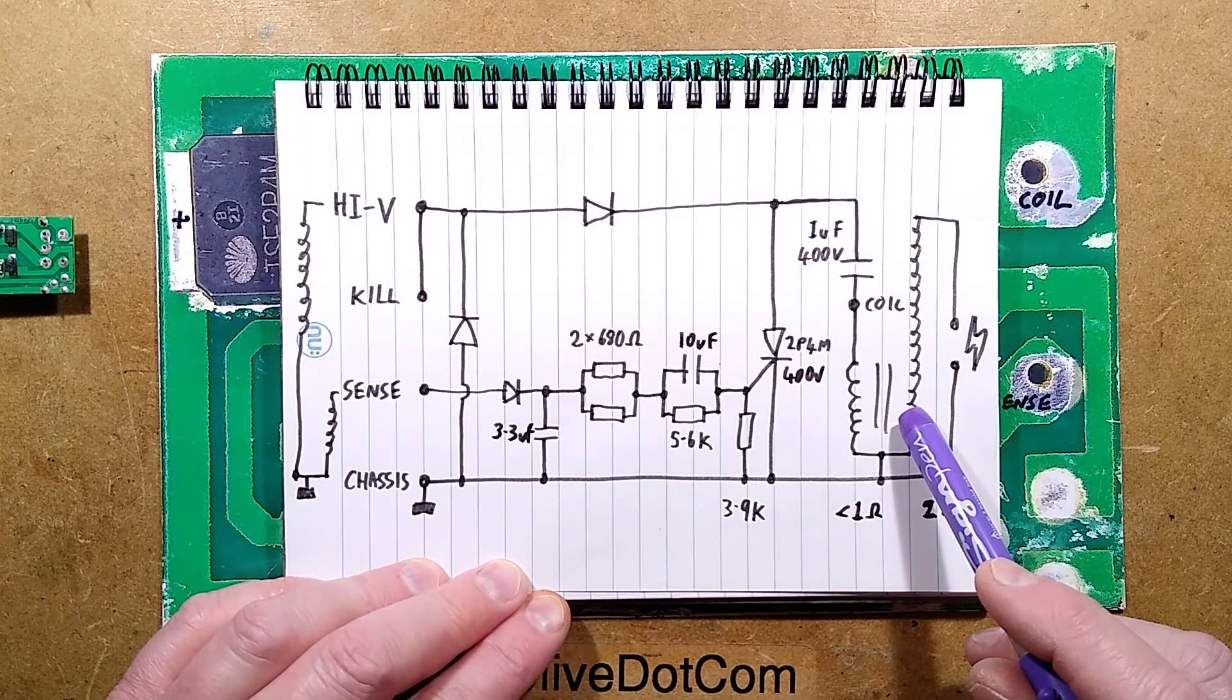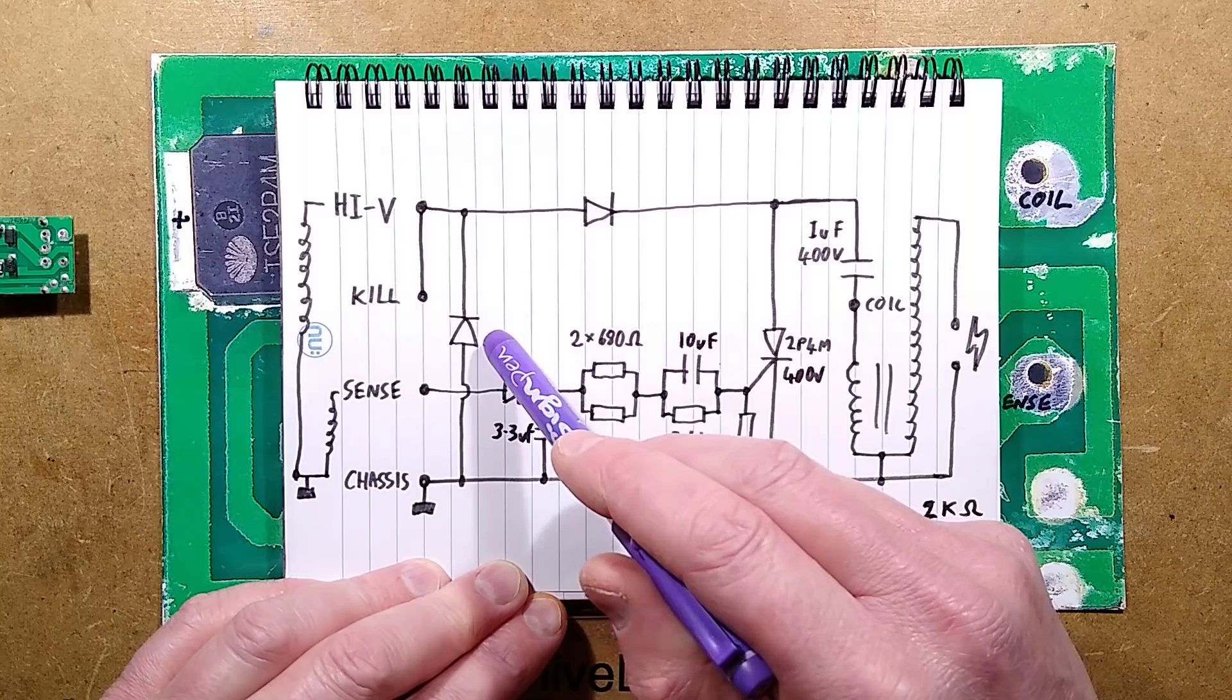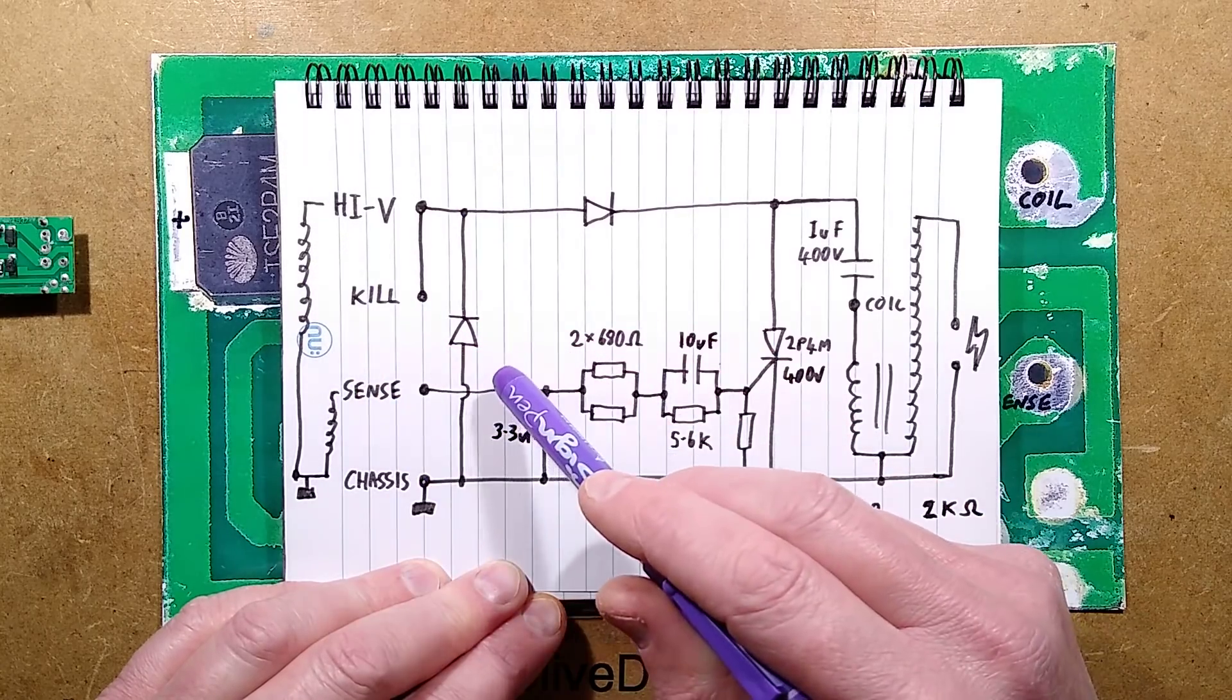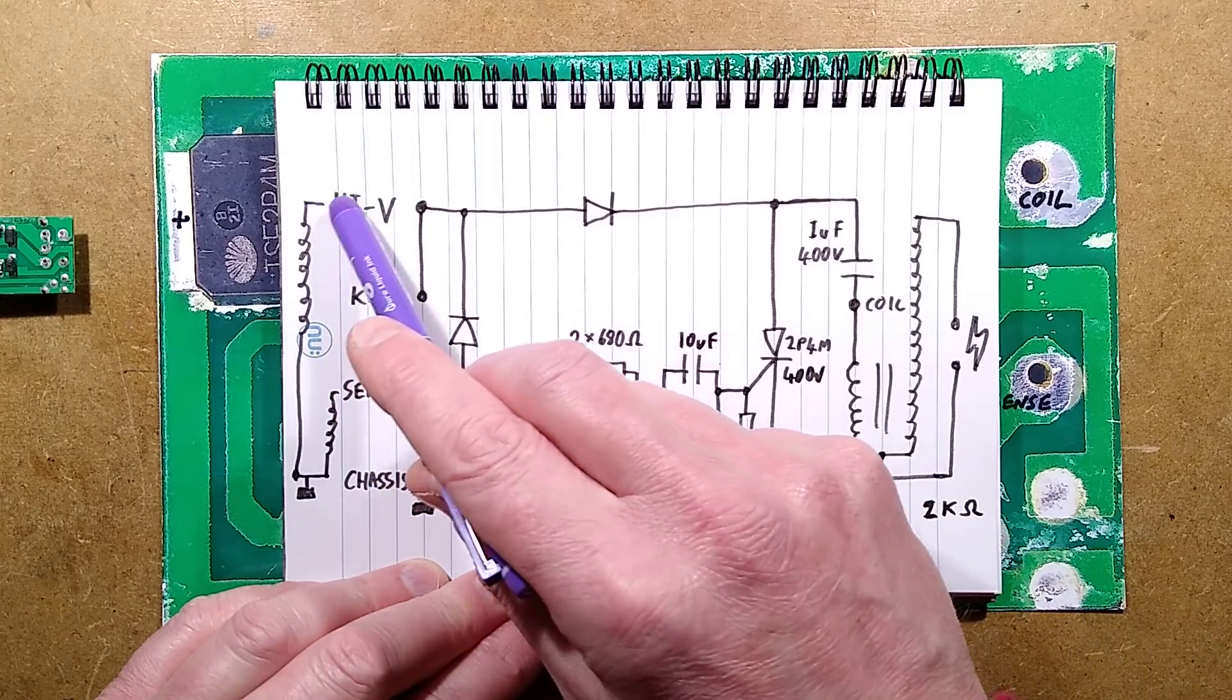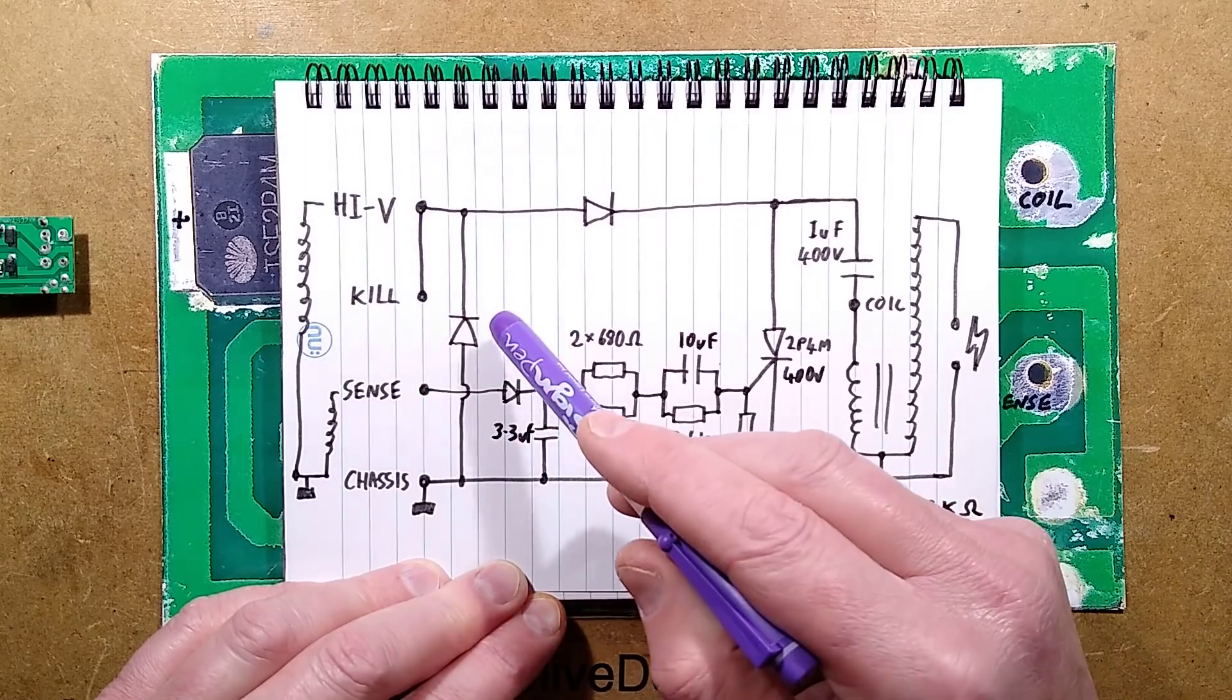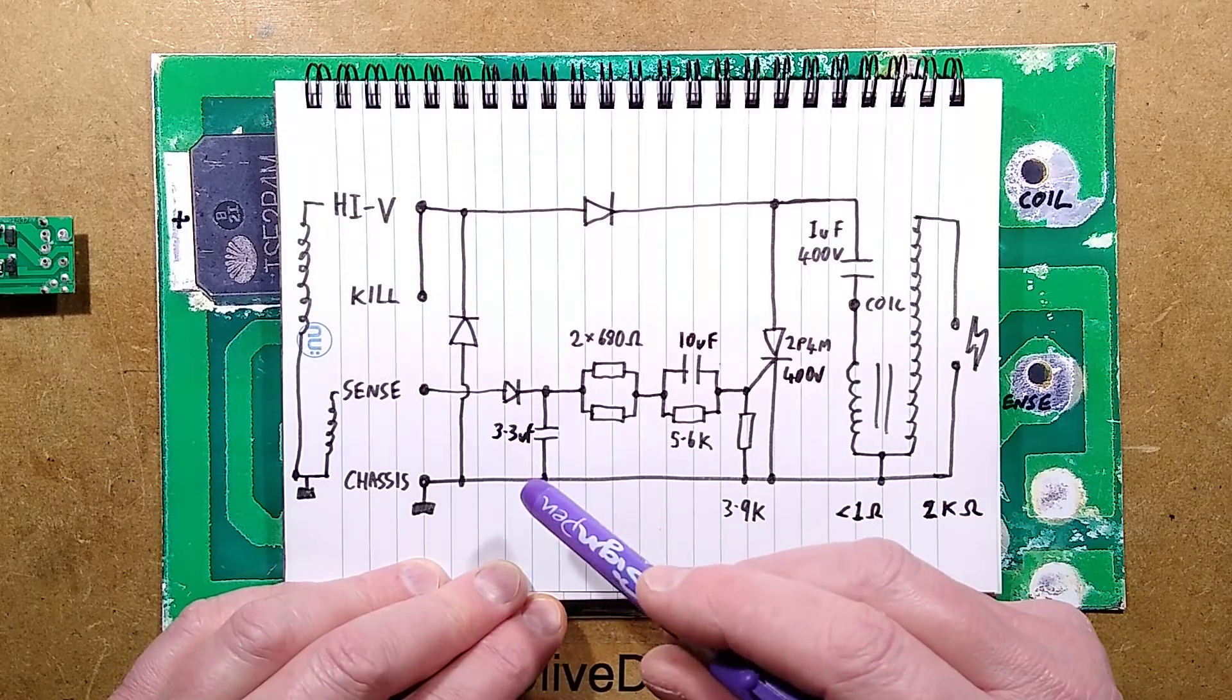Things worthy of note and unexpected - they've got a diode here that effectively shunts the high voltage winding on every half wave. So it's only as it's going positive at this end that it's actually charging that capacitor up. When it goes negative, it bridges it. I'm not sure why they do that.